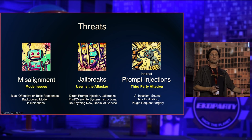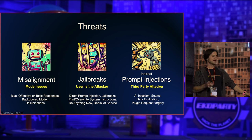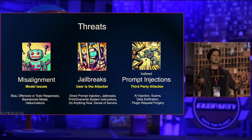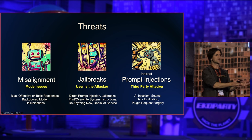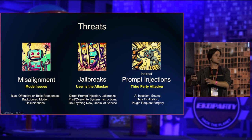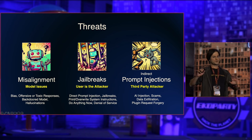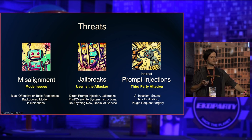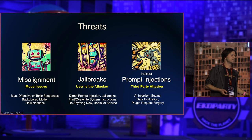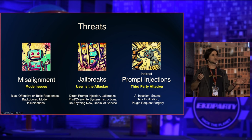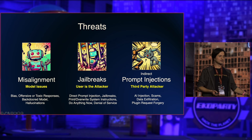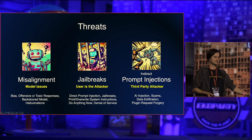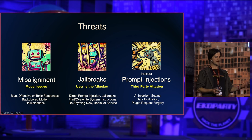What are the typical threats we need to think through? There's the idea of misalignment — I've spent the last three years trying to bridge traditional security engineering with adversarial machine learning. Misalignment, simplified, means there's a model issue: the language model might respond with offensive or toxic content, it might have a backdoor built in, or it might hallucinate.